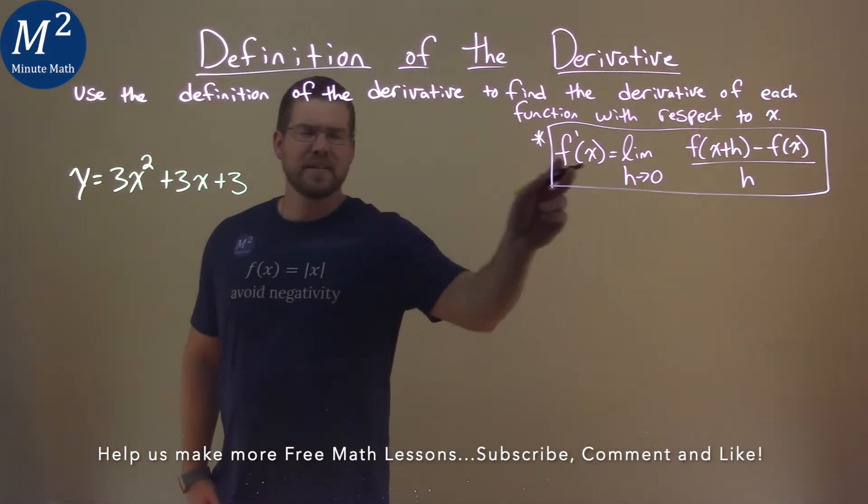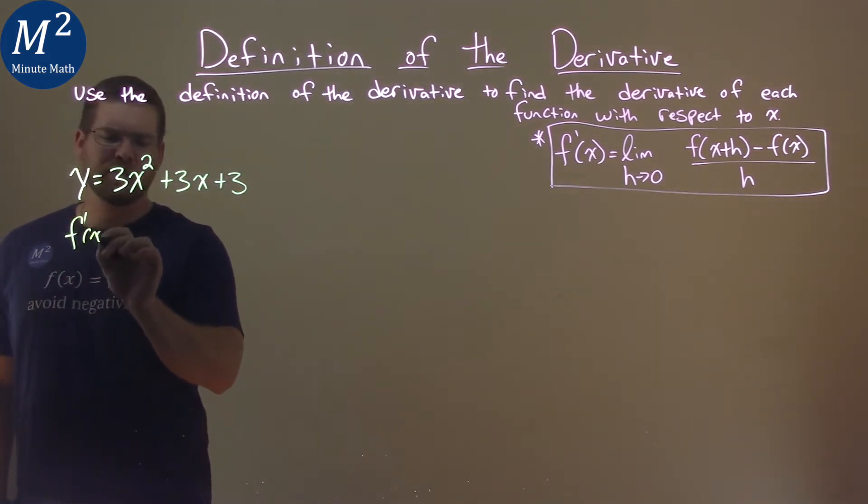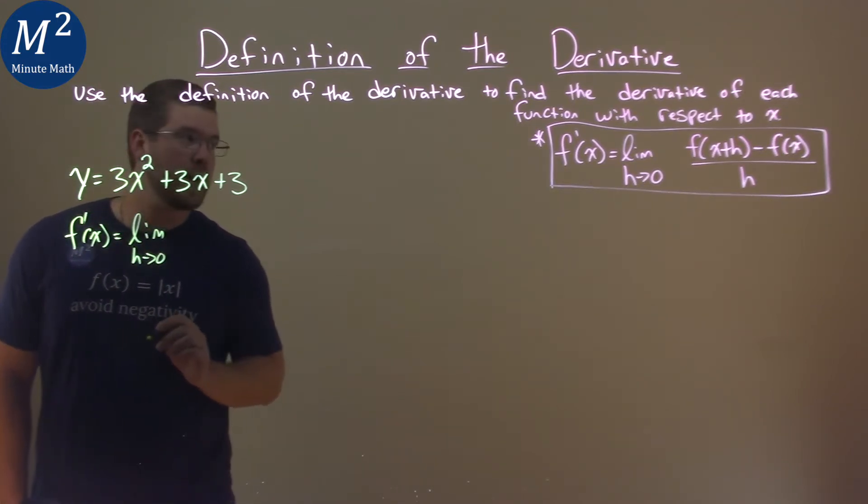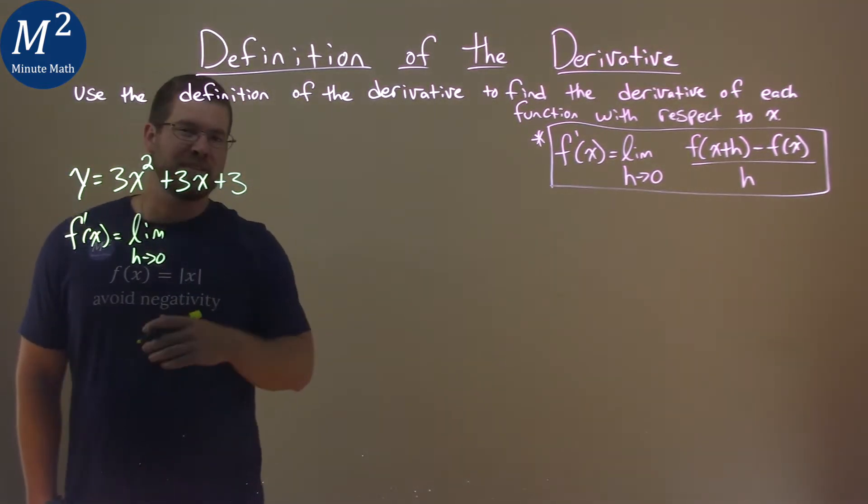Well, our definition is given right there, so we need to apply that here. Our f prime of x, or y prime, is the limit as h approaches 0—don't forget it—of our function, but we have to put x plus h in instead of x.